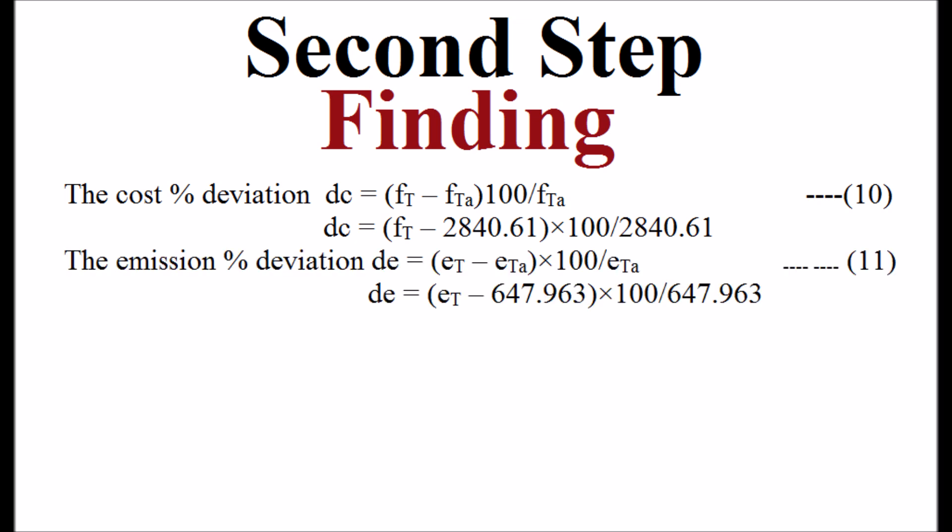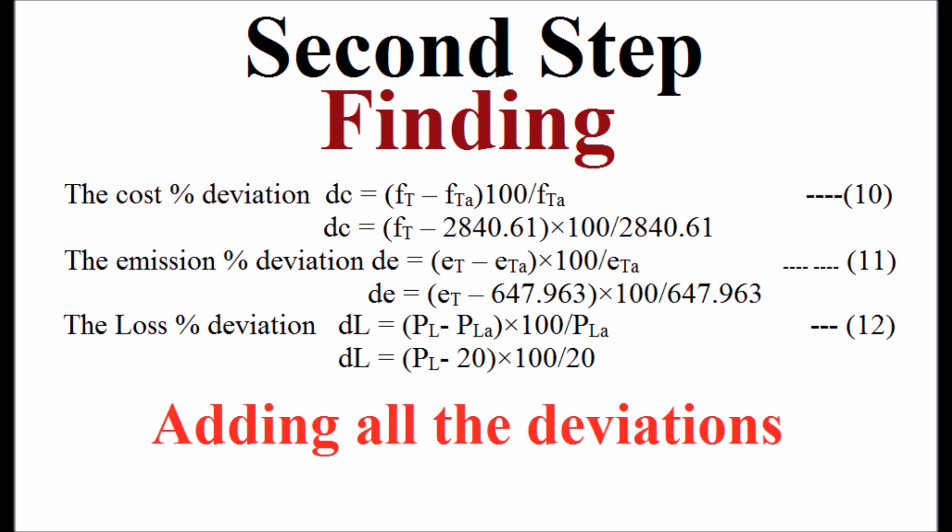The second step is finding the deviation of the cost, emission and loss from its optimal value as shown in the equation. All are calculated in terms of percentage. Now, adding all these deviations gives percentage total deviation.